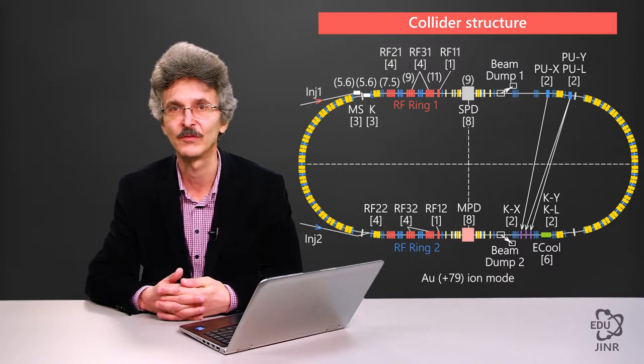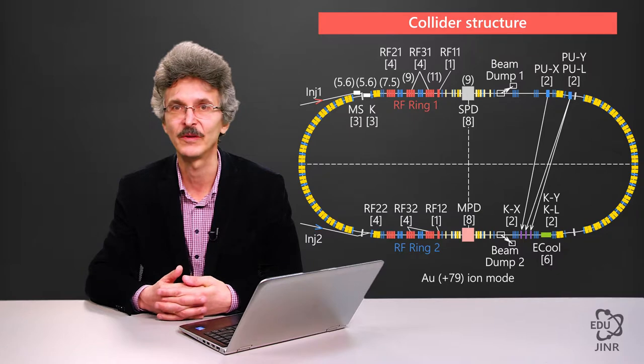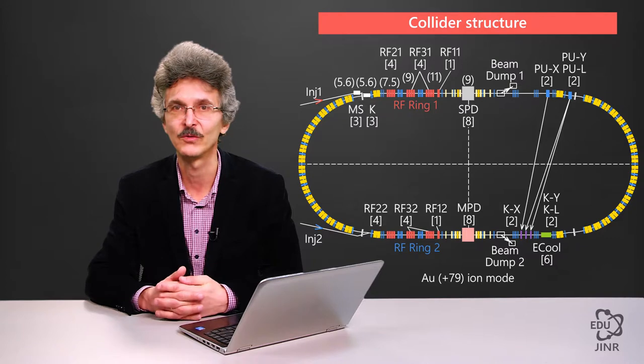A beam is accumulated in the stable motion field and is injected either into the second field of stable motion or into the unstable motion field. Gradually, newer portions are added to the accumulated beam. Thereafter, the RF system, which ensures beam accumulation, shuts down.